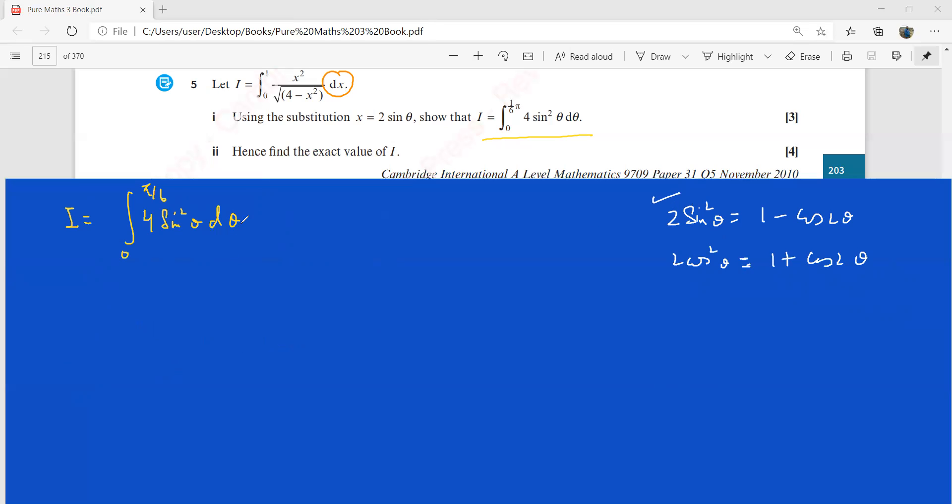I would rather be writing this because you have 4 here, so I can write it as 2 into this 1 minus cos 2 theta d theta with the limits from 0 to pi by 6.